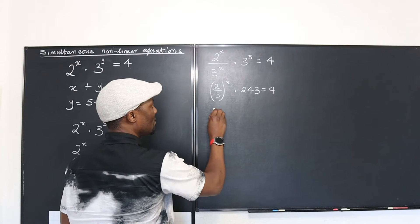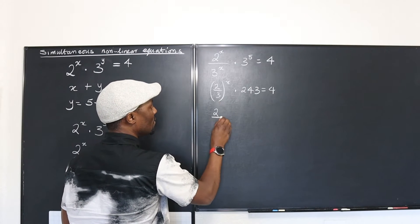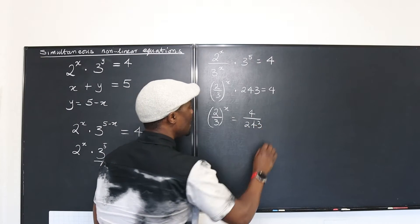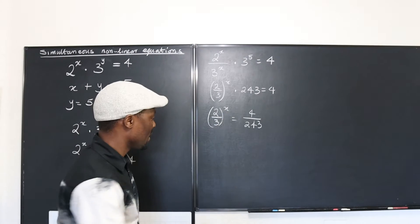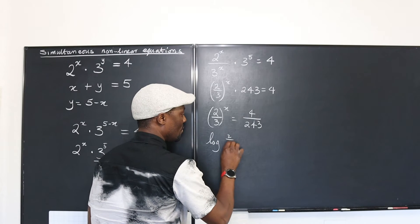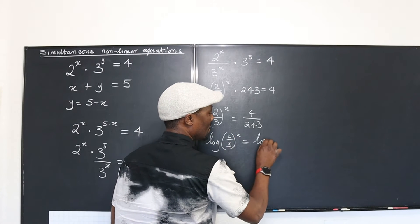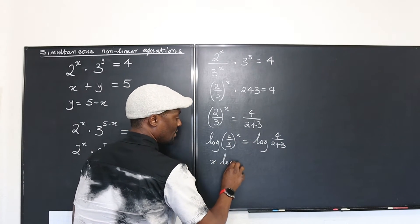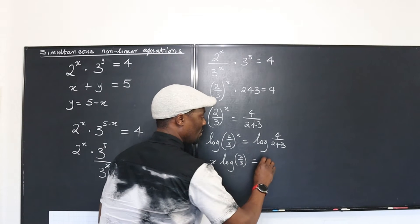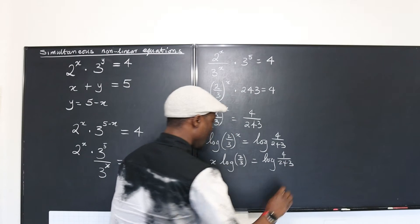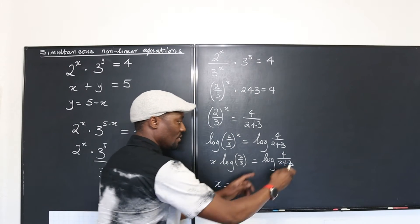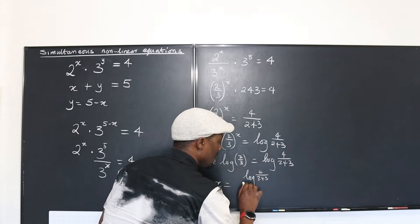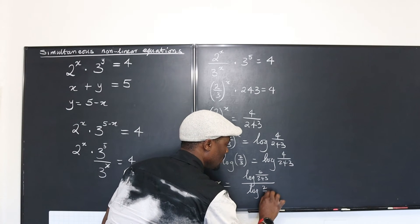We can divide both sides by 243, giving (2/3) to the x equals 4 over 243. Now, to get x, let's introduce logarithm. We take the log of both sides: log of (2/3) to the x equals log of (4/243). We drop the exponent down and say x times log(2/3) equals log(4/243). Isolating x, we get x equals log(4/243) divided by log(2/3).